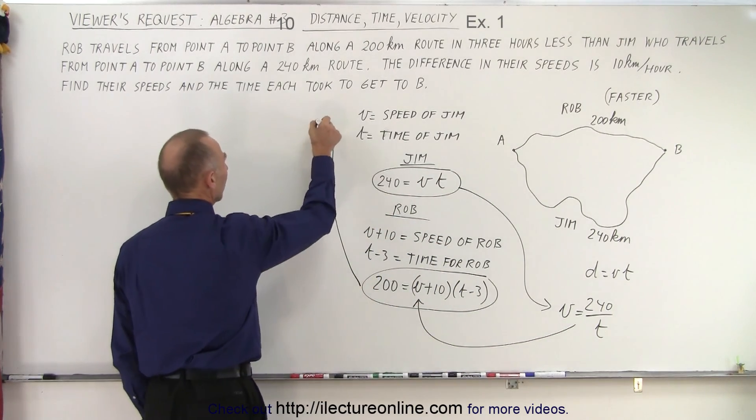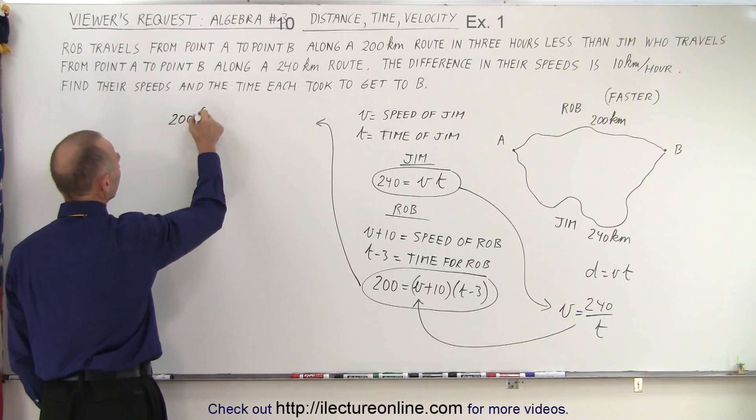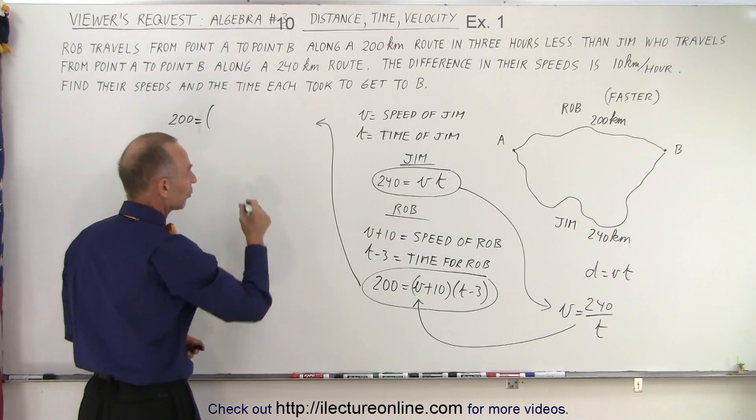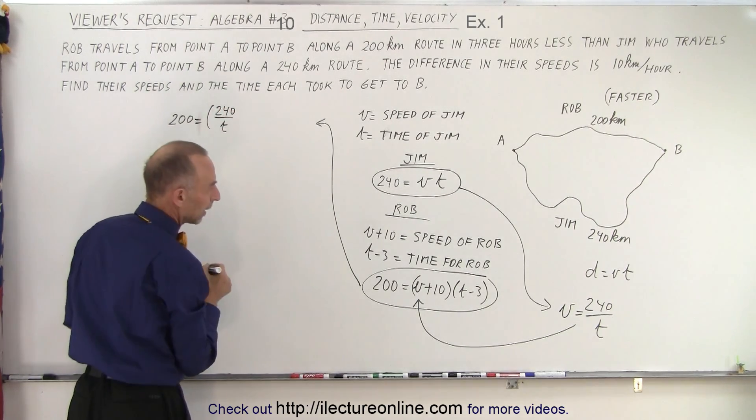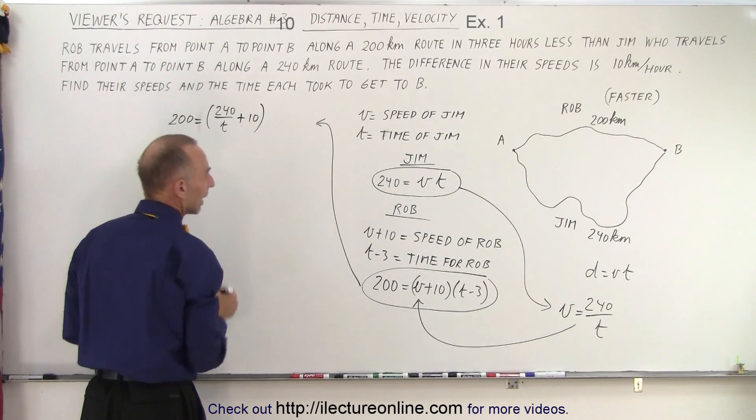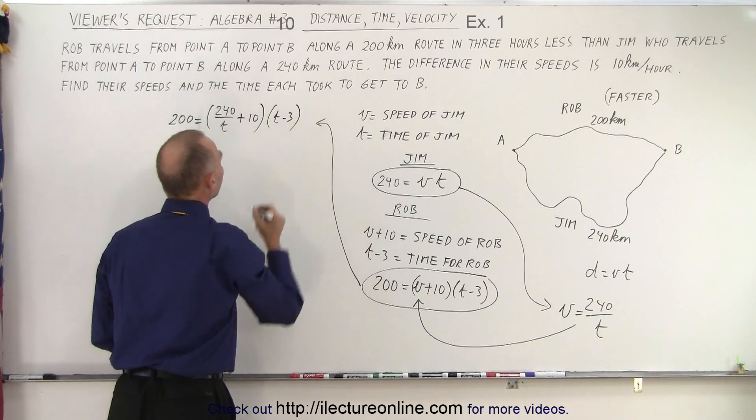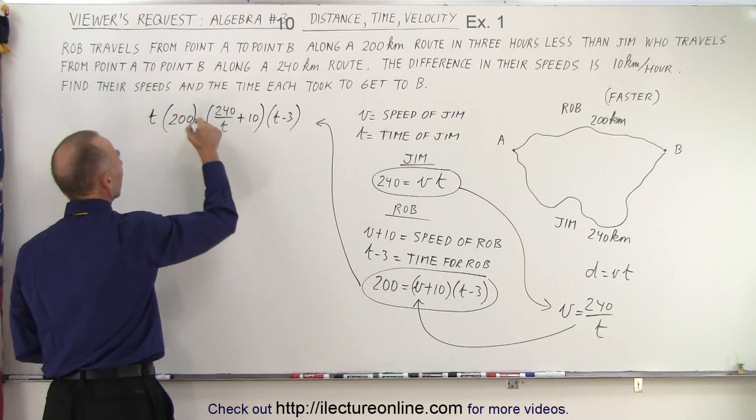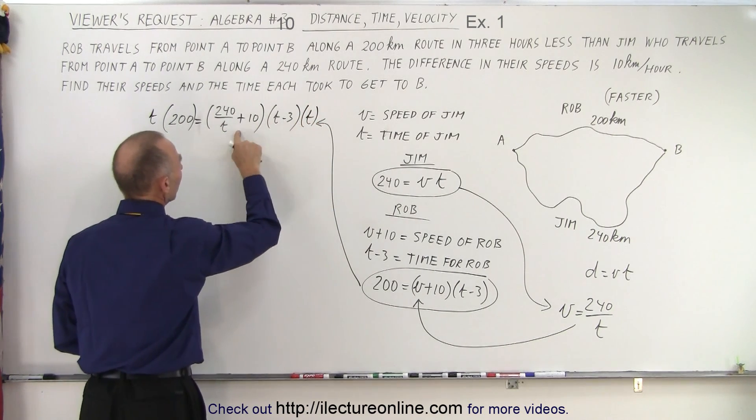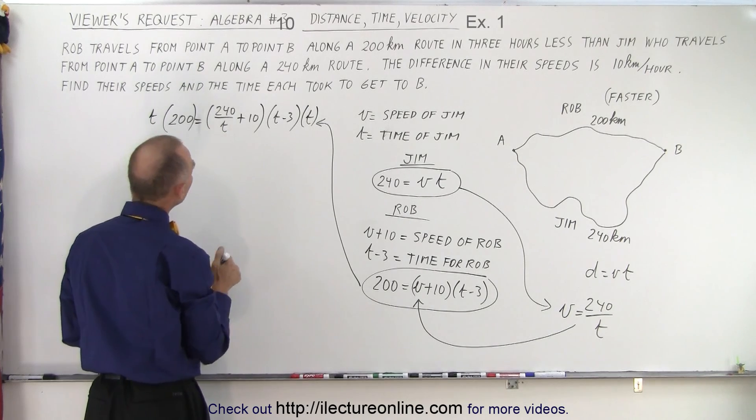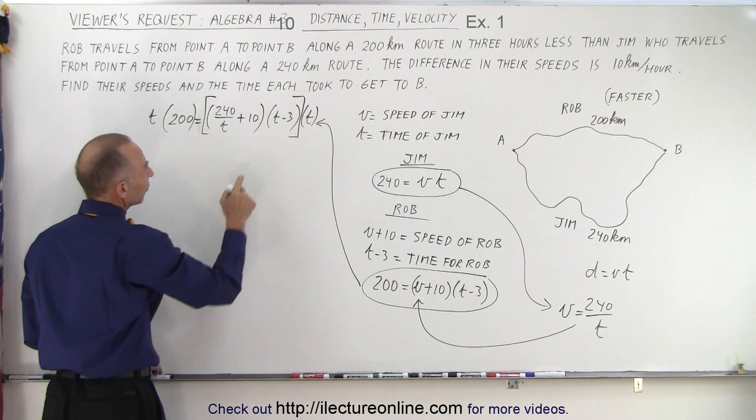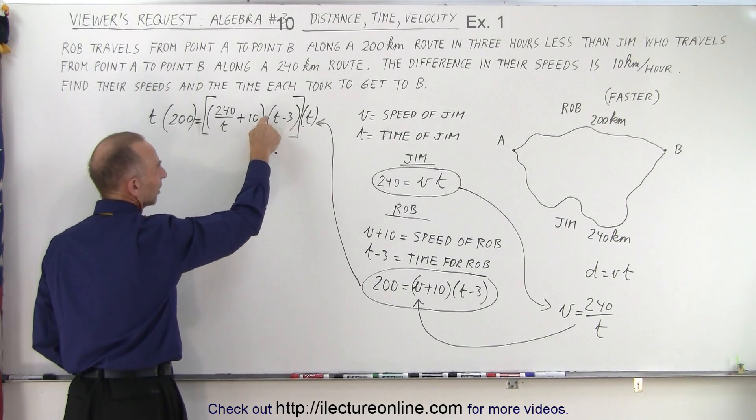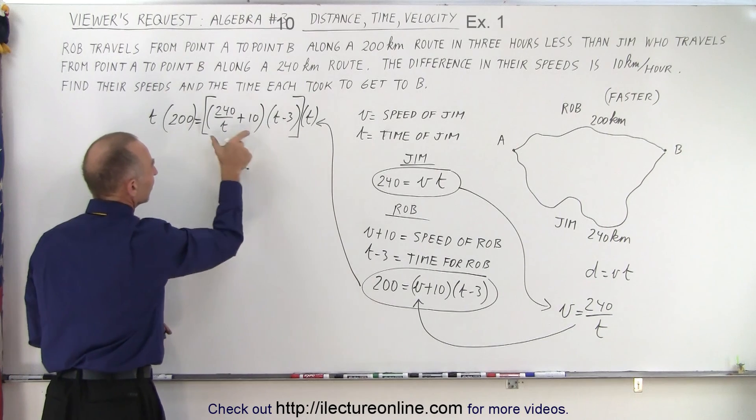And when we do that the equation now will look as follows. Now we have 200 equals V which is now 240 over T plus 10, and then we have T minus three. So to get rid of the denominator I'm going to multiply both sides by T. Now notice that since this is a product, I can only multiply the T by one of them not by both. Only if there was a plus or minus sign would we have to multiply the T by both.